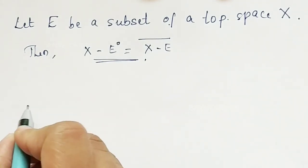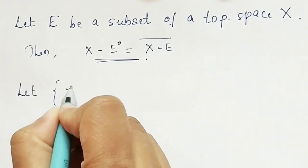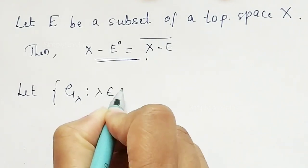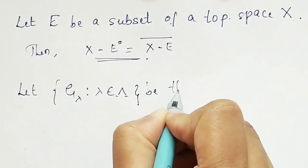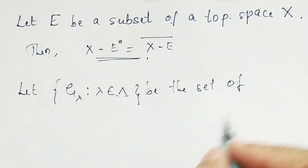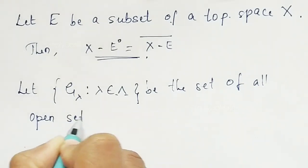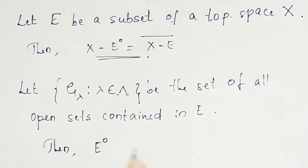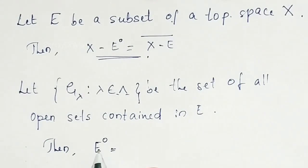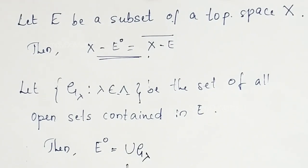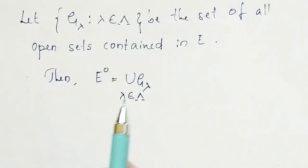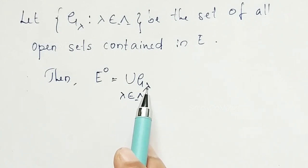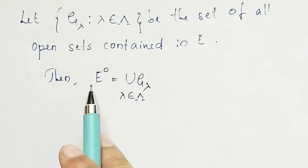Let's prove this. Let us consider a family, say G_lambda, where lambda belongs to an index set, which is the family of all open sets contained in E. Then, by the definition of interior that we have already discussed in our previous video, interior of any set can be described as the union of G_lambda, where lambda belongs to the index set. The union of all open sets contained in E can be written as interior of E.